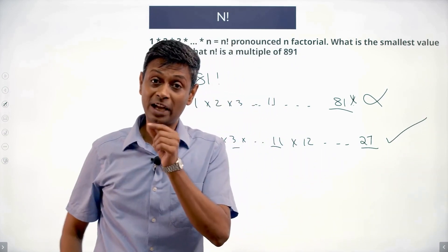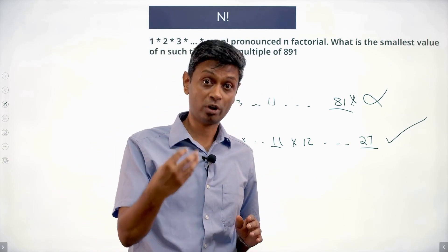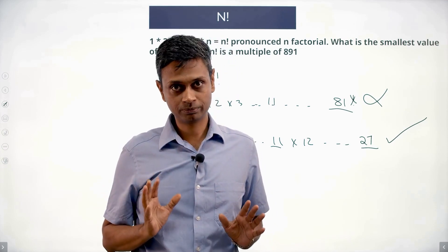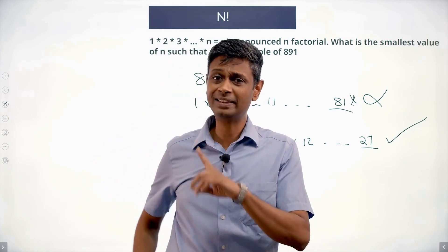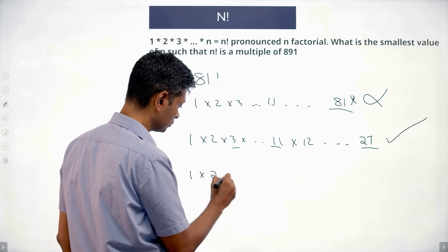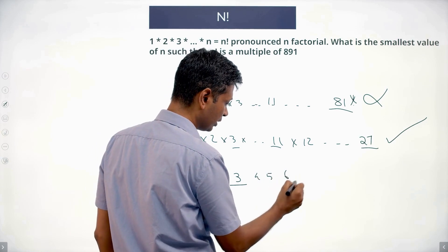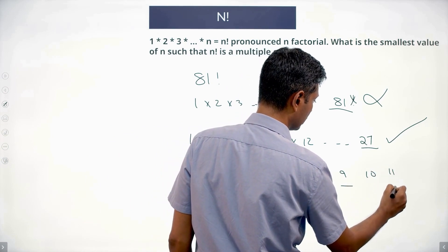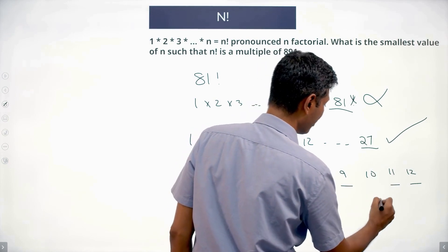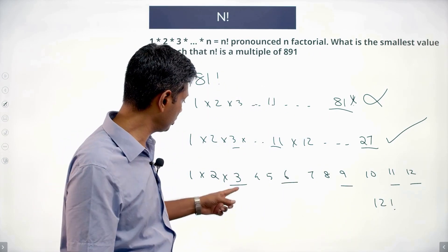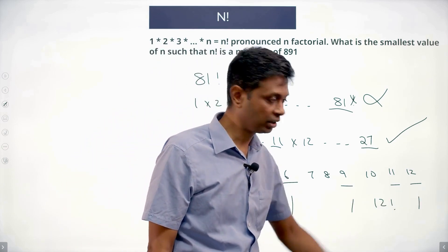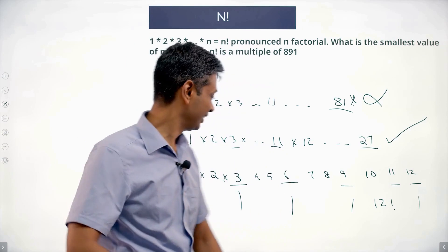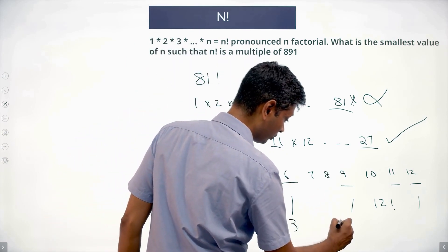Now I know the method: I need to pick up four 3s and one 11 in my factorial product. I'm not going to do trial and error anymore. Let me think about where the 3s come from: 1, 2, 3 — gives a 3; 4, 5, 6 — gives a 3; 7, 8, 9 — gives two 3s (since 9 = 3²); 10, 11, 12 — gives a 3 and an 11. So 12 factorial would work: that's four 3s and an 11.